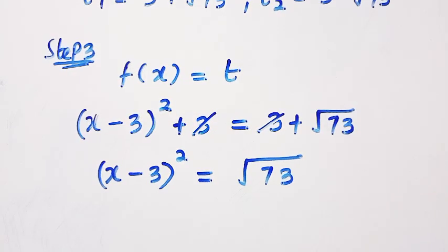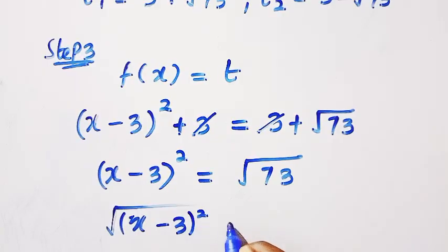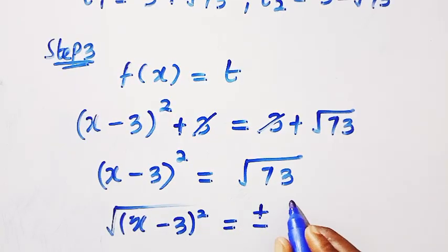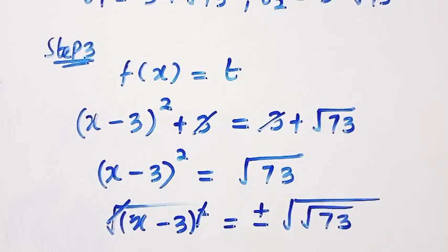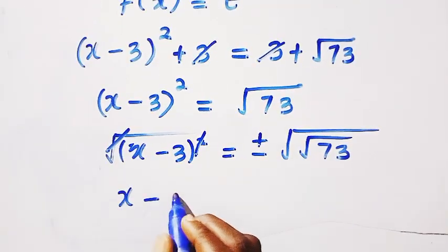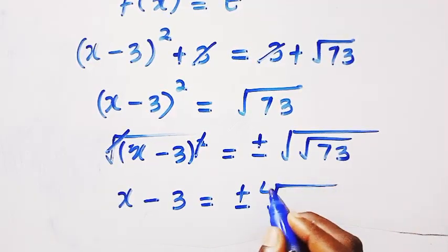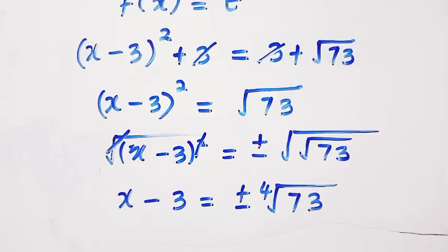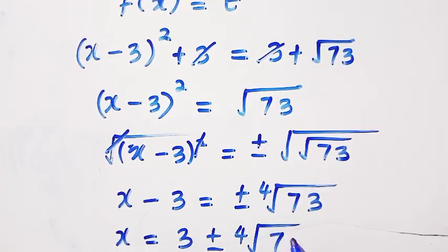By taking the square root of both sides, so we have the square root of x minus 3 all squared equals plus or minus the square root of square root of 73. So, here we have x minus 3 equals plus or minus the 4th root of 73. And here we get x equals 3 plus or minus the 4th root of 73.